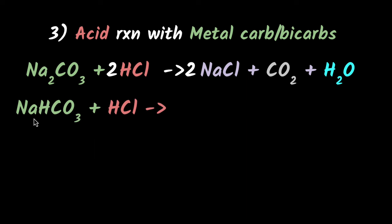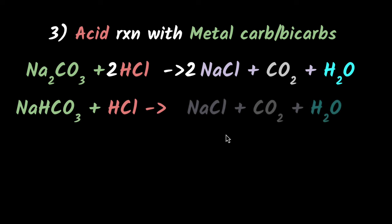What happens if you have sodium bicarbonate reacting with HCl? Pause the video and try the answer yourself. Again, hydrochloric acid will donate its H+ ions. H+ ions can combine with these things to give H₂O and CO₂. Na can combine with Cl, so we get sodium chloride plus carbon dioxide plus water — exactly the same thing. And the beautiful thing is this equation is already balanced.